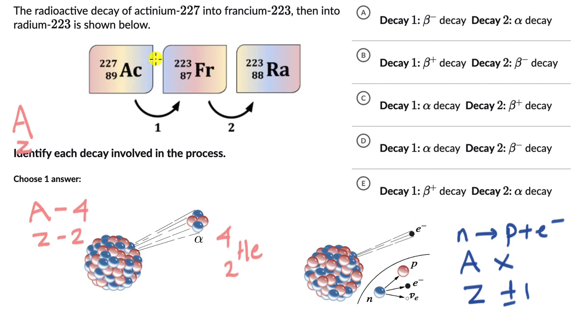So now let's take a look at what's happening here. In the first case, in the first decay process, there is a change in atomic number by 4 from 89 to 87, so definitely the first decay process is alpha decay and we need to figure out if the second one is beta minus or beta plus.